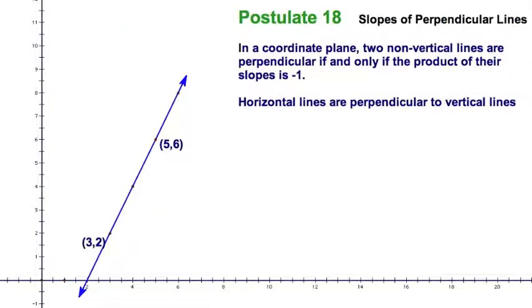Let's have a quick look at postulate 18 here. We're going to start with this blue line and I can see the slope up 4 over 2. We know how to do this. This is a slope of 2, so I'm just going to write it down like that.